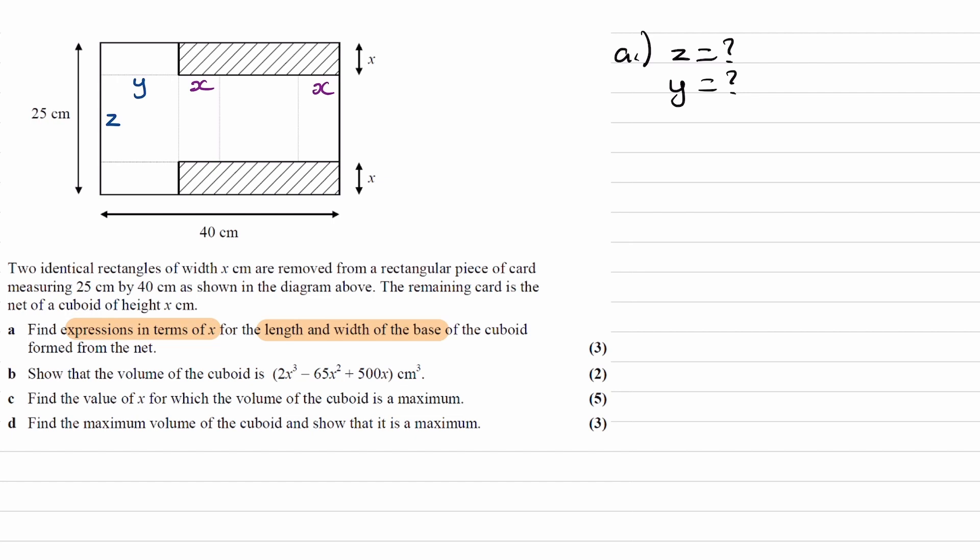Let's start with this side here. So we know that this length here is x, so that means that these two will have to be x as well. And so we can form an equation from that side, this side here. We can say that 25 is equal to z plus 2x. And then we can rearrange for z, and we end up with 25 minus 2x. So that would be the length of the base of the cuboid in terms of x.